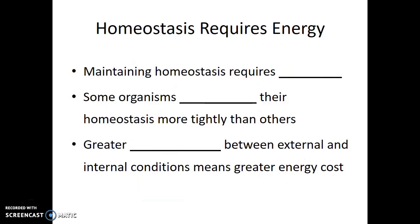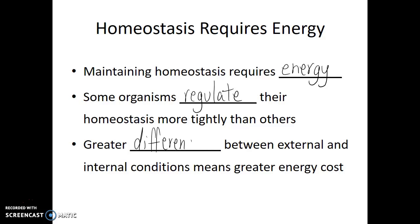Now, in order for internal conditions to be different than external conditions, an organism must spend energy to do that. Maintaining homeostasis requires energy. Some organisms regulate their homeostasis more tightly than others, meaning they're willing to spend more energy or more of their resources go towards maintaining homeostasis. And it turns out that the greater the differences between external and internal conditions, the greater the energy costs.